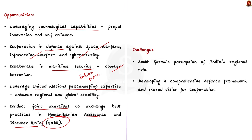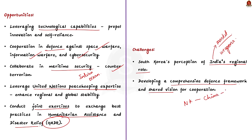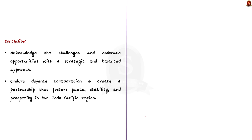Moving on to challenges: the first challenge is South Korea's perception of India's regional role, as India provides a market for South Korea for profit-driven weapon sales. Because of this, both nations are focusing excessively on weapons acquisition, leaving behind broader strategic considerations. The second challenge is developing a comprehensive defense framework and shared vision for cooperation. For example, the recent coalition of North Korea, China, and Russia poses a serious challenge to collaborative efforts. For the conclusion: both countries should acknowledge challenges and embrace opportunities with a strategic and balanced approach to foster peace, stability, and prosperity in the Indo-Pacific region.